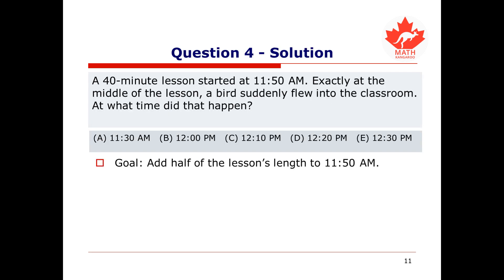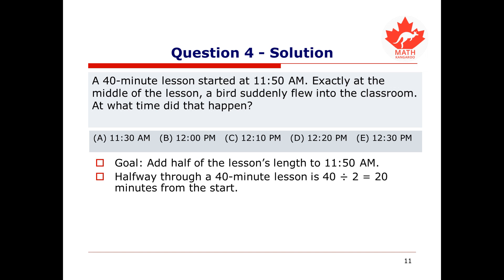A full lesson is 40 minutes. Since the bird flew into the classroom in the middle of the lesson, we have to add half of that to 11:50 a.m., which is the start. 40 divided by 2 is 20, so halfway through the lesson is 20 minutes from the start. Adding 20 minutes to 11:50 a.m. gives the middle of the lesson, which is 12:10 p.m., and that is option C.